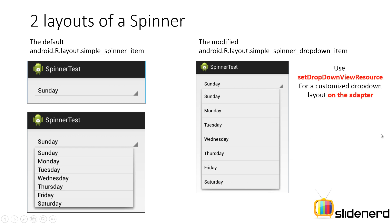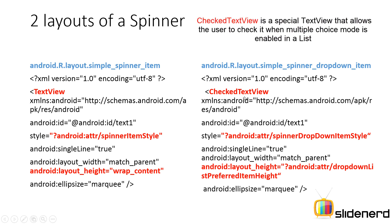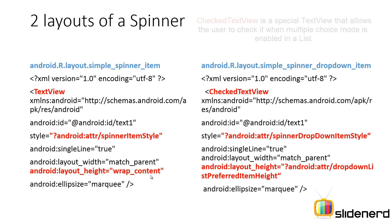Can you change the layout of the drop-down list? Yes — use the method setDropDownViewResource on the adapter for a custom layout. As a comparison: the simple_spinner_item on the left contains a plain TextView, while simple_spinner_dropdown_item on the right contains a CheckedTextView, with differences in style and height. You can go ahead and make a custom layout to fully control how your spinner looks.